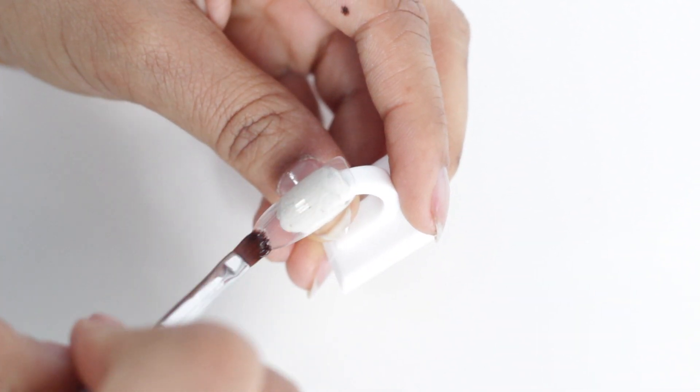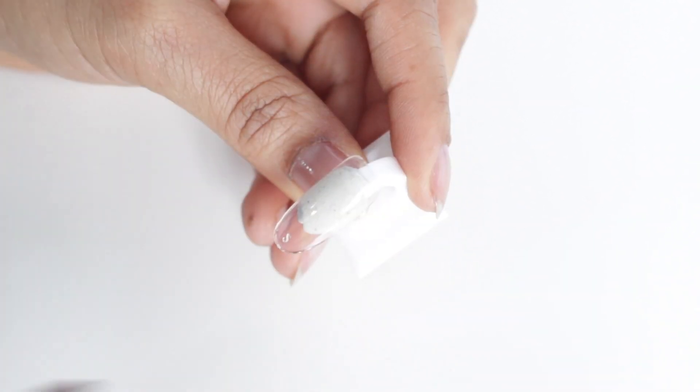So to get started, we're just going to apply a base coat and then cure that in my LED or UV lamp.